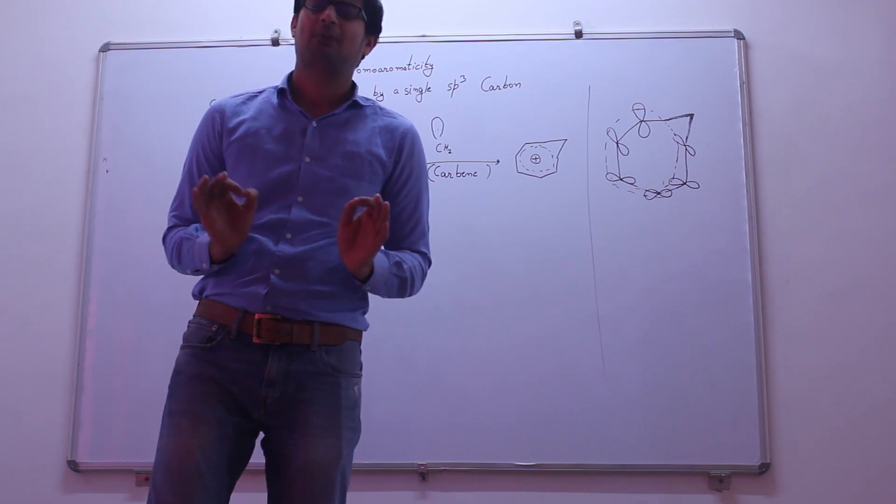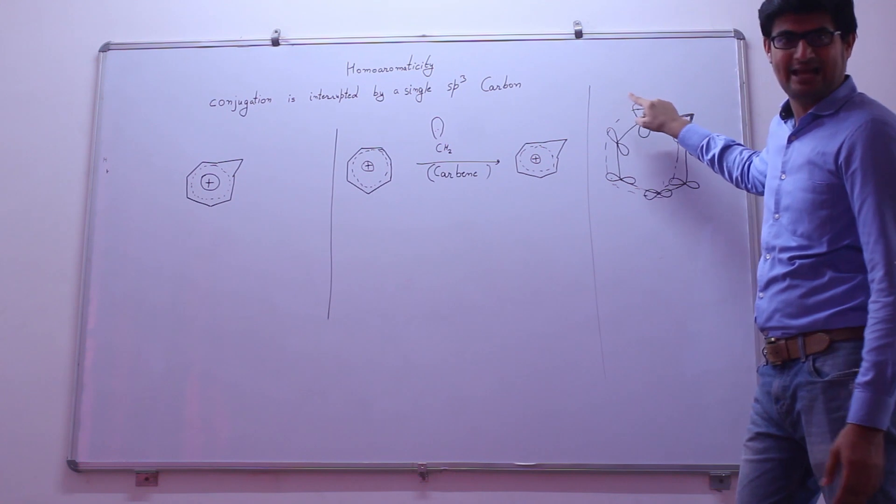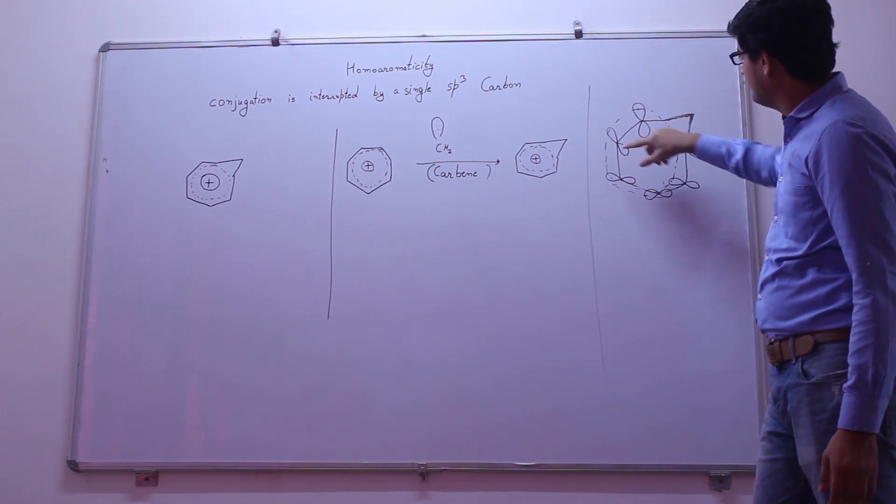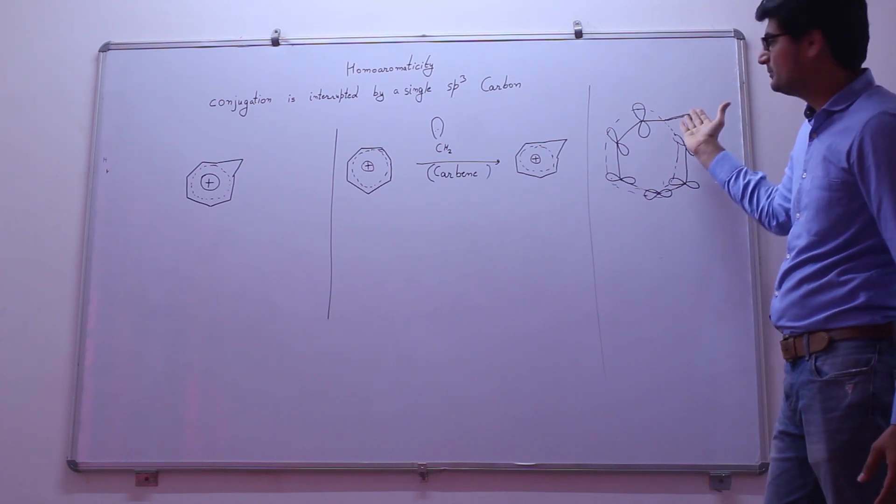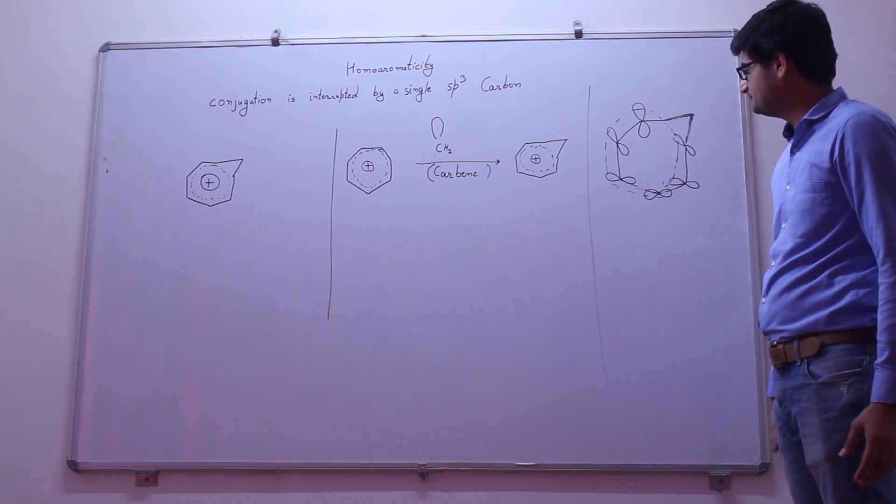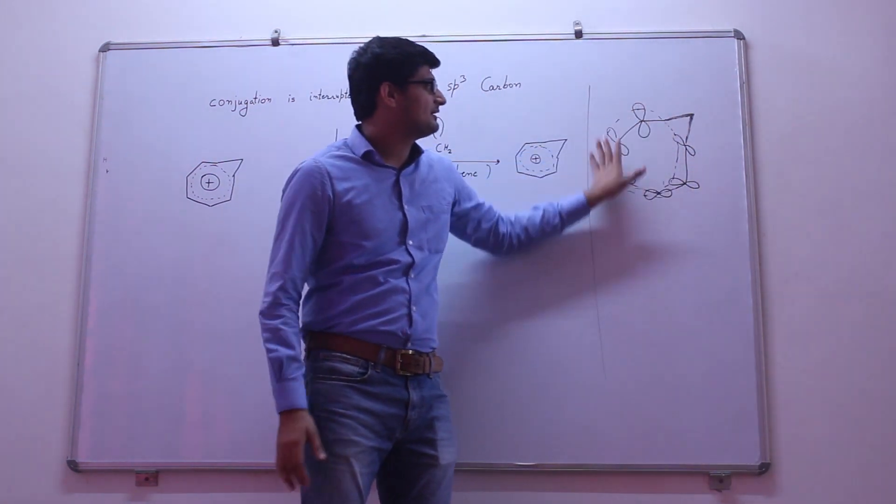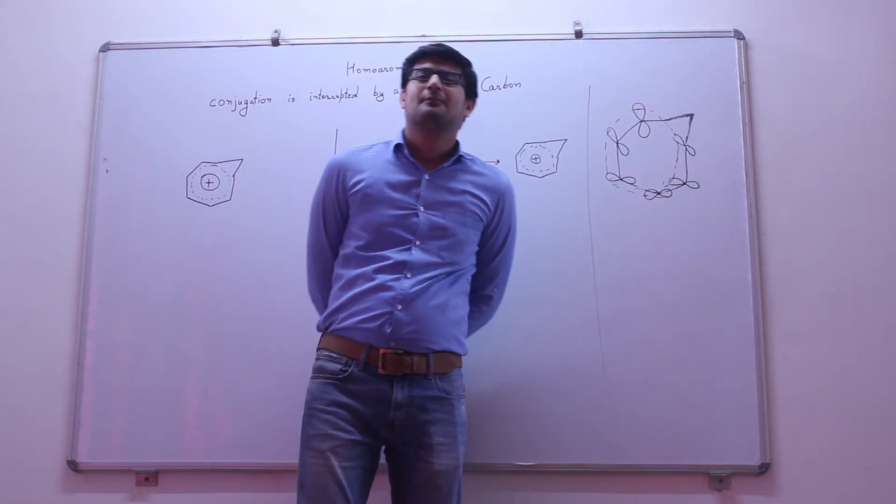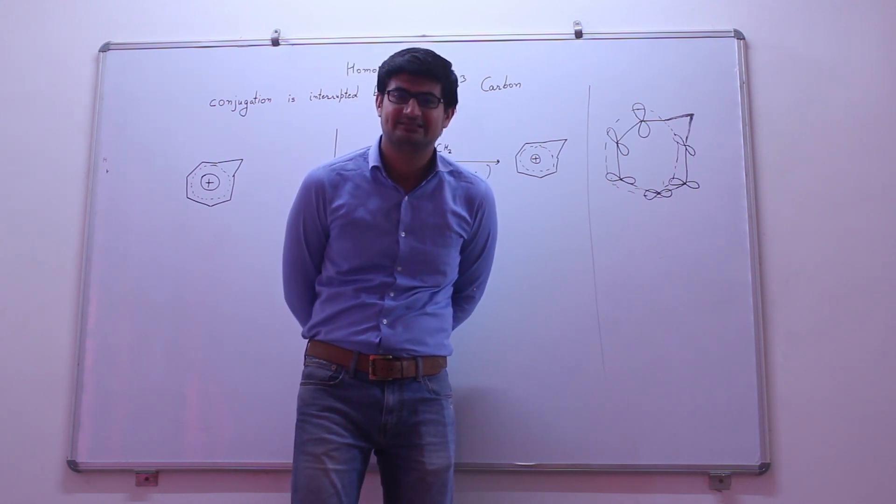The sp3 hybridized carbon lies above the plane so the orbitals can come in conjugation with each other. All rest of the carbons are planar in nature, following all the conditions for aromaticity.